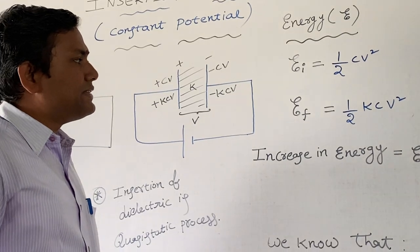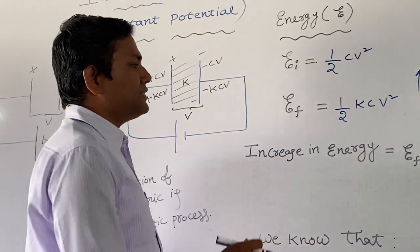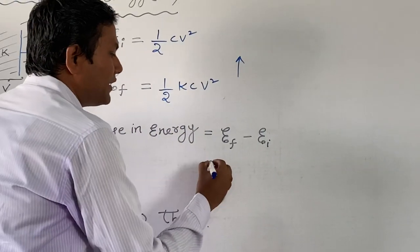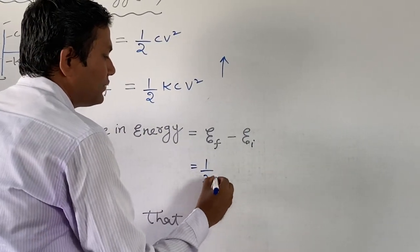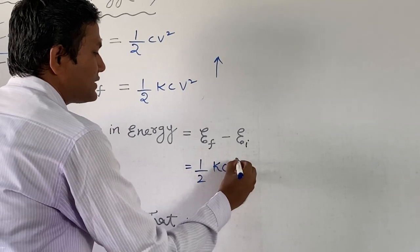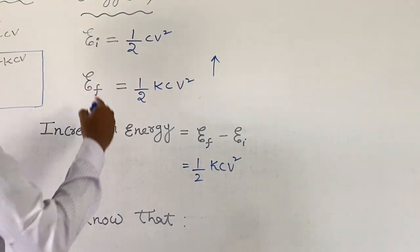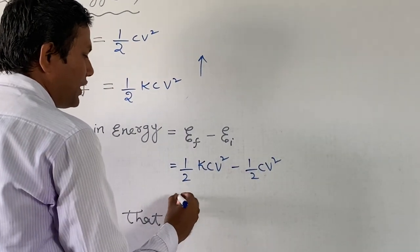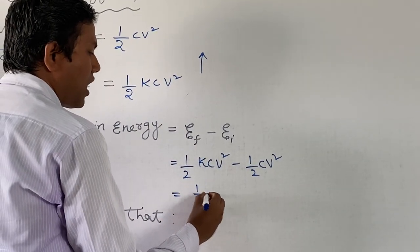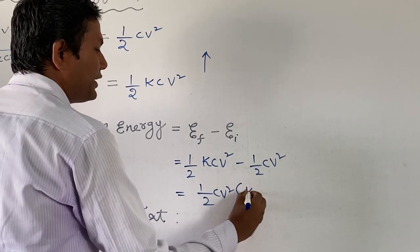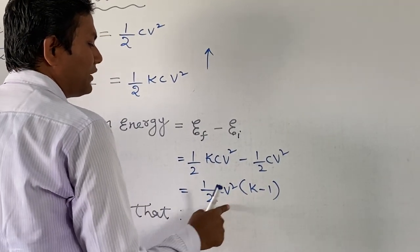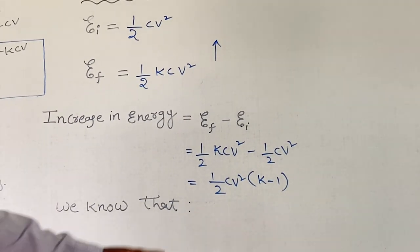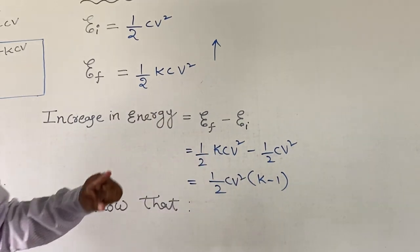Now we can calculate the increase in energy. Increase in energy = final energy minus initial energy. Final energy is ½KCV², and initial energy is ½CV². So we can write: ΔU = ½CV²(K − 1), taking ½CV² as the common factor.